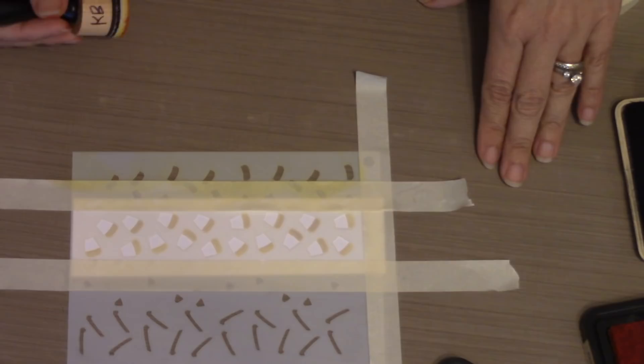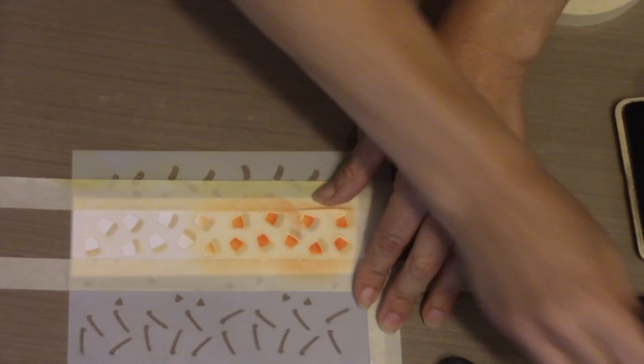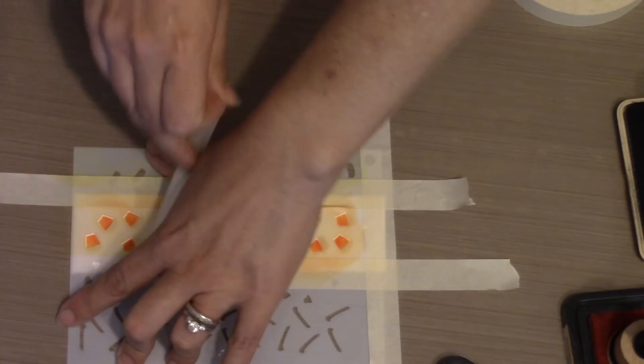One of my favorite things about the Stage stencils is how durable they are. I can do a swirling motion with my ink, which really pushes the ink out to the edges of the openings. It gives me a really wonderful layered look here to my candy corn.